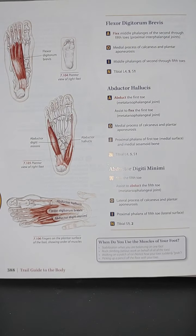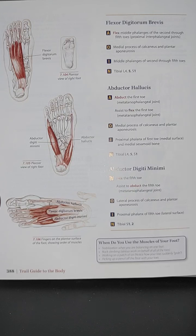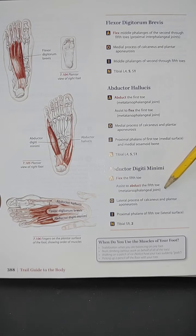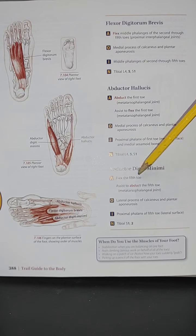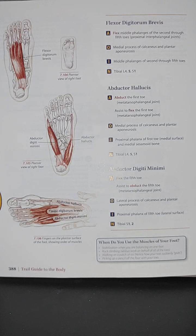The nerve innervation for the abductor hallucis is the tibial nerve, L4, L5, and S1. For the abductor digiti minimi, the action is to flex the fifth toe and assist to abduct the fifth toe. This one is very self-explanatory — it flexes and abducts because of its position on that side.